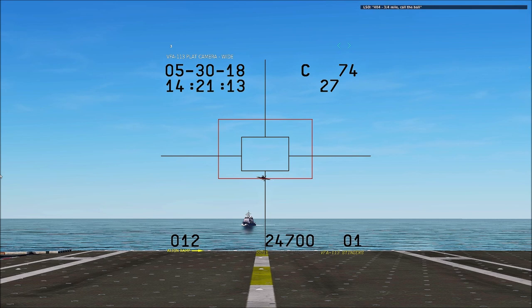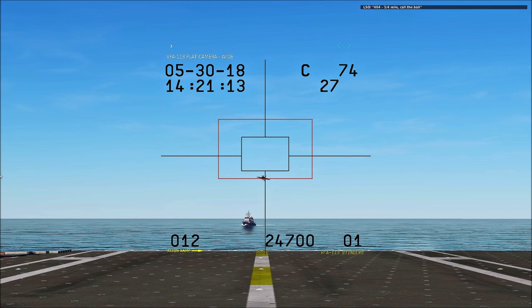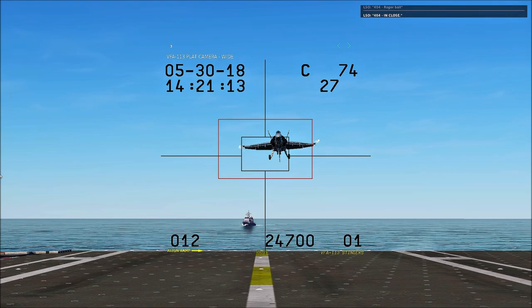Hornet on the ball, 454. Roger ball. Power. Now hold that glideslip, power. A little right for lineup. When you turn right, add a little power. There we go. A little high. In close. Okay, that's been your best one.